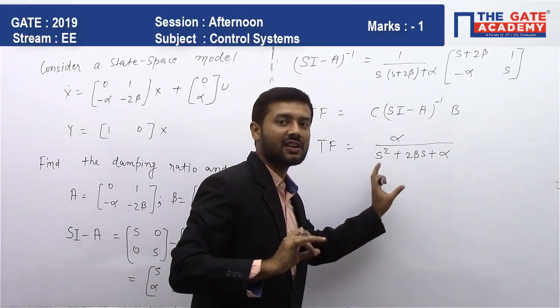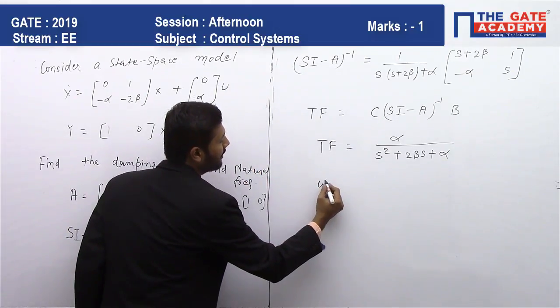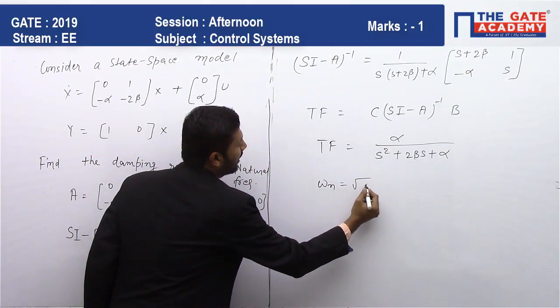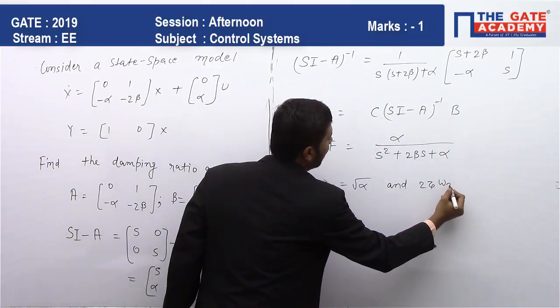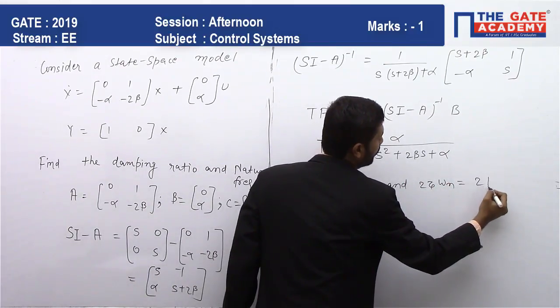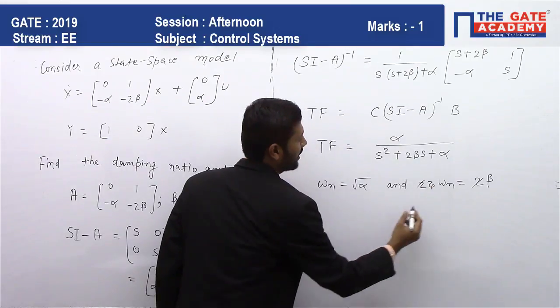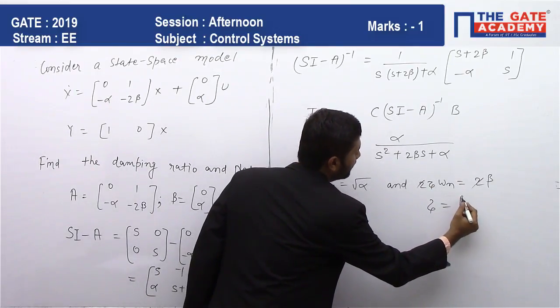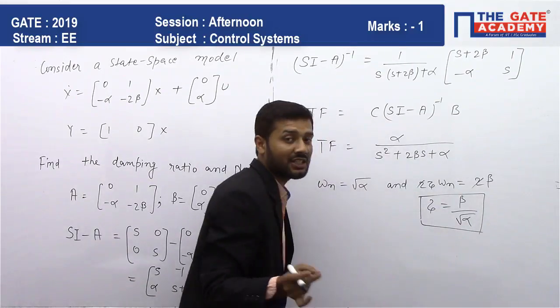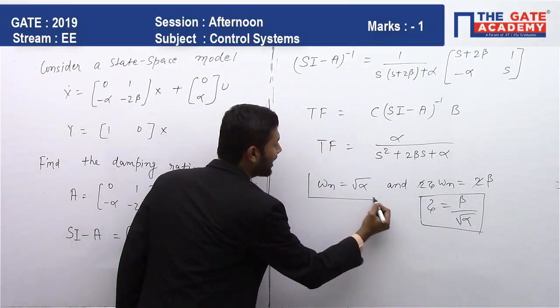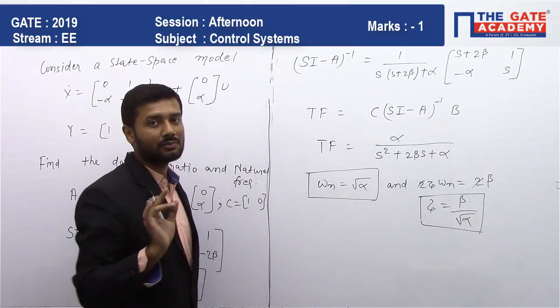By comparing it with standard second order system, we have omega_n equals to root alpha and 2*zeta*omega_n equals to 2*beta. So zeta equals to beta by root alpha. The damping ratio of the system is beta by root alpha and omega_n is root alpha radians per second.